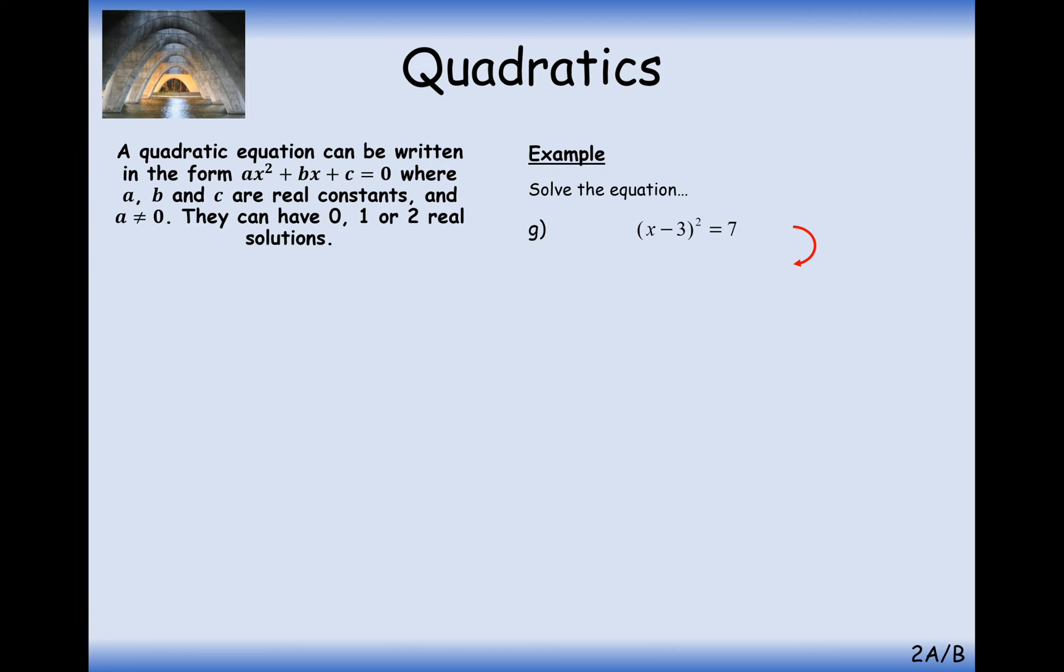Do exactly the same thing here, but we're going to need a square root on this 7 here. So either the thing inside the bracket either equals plus or minus the square root of 7. So then adding on 3 to both sides, we're going to get 3 plus root 7, or 3 minus root 7. So we've got two answers here.